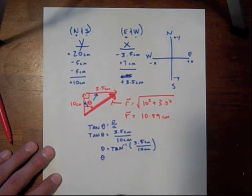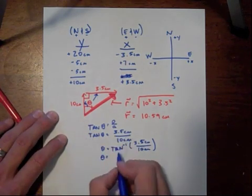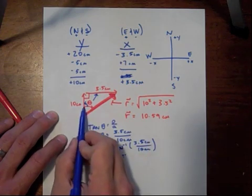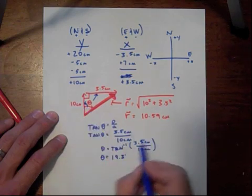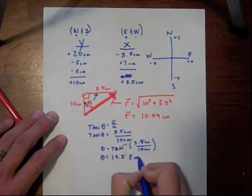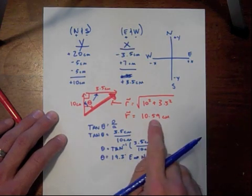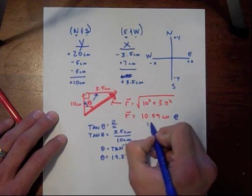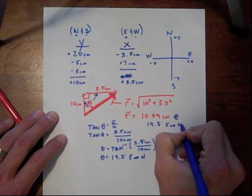And our angle for this comes out to be 19.3 degrees. And looking at it, we start off north and we go east. So, we move east of north. So to report our total vector, it'd be 10.59 centimeters at 19.3 degrees east of north. And that would be our answer.